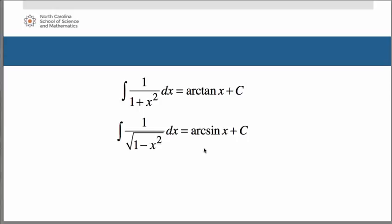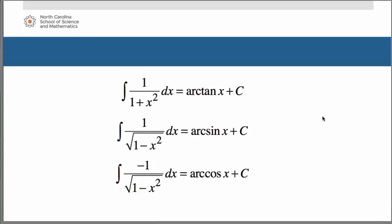The second rule is for arcsine — inverse sine. If you have the antiderivative of 1 over the square root of 1 minus x squared dx, that antiderivative is arcsin of x plus c. The last one is for arccosine, which is simply the same as arcsin but negative. Think of the hint: if the answer to your antiderivative begins with c — think of this as cos⁻¹ of x, which begins with c — then it's negative.